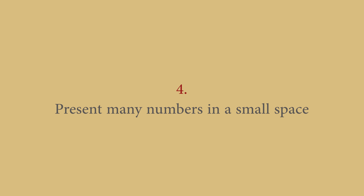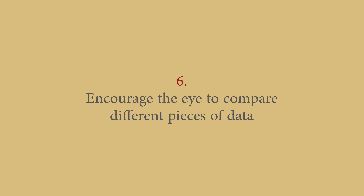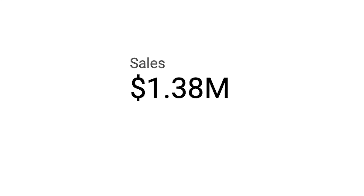Number four: present many numbers in a small space — essentially the whole point of data visualization. Number five: make large data sets coherent. There simply is no better way to make sense of large data sets than with visualization, but the key word here is coherent. It's actually easier than you might think to visualize data poorly, perhaps by using an unsuitable visualization or too many different nonsensical colors. Number six: encourage the eye to compare different pieces of data. All data visualizations should be comparing data to help the viewer understand it better. A single figure without any context has limited usefulness — it's only when you include other data that it can be better understood through comparisons and correlations, and those comparisons should be made as easy as possible for the viewer to see.